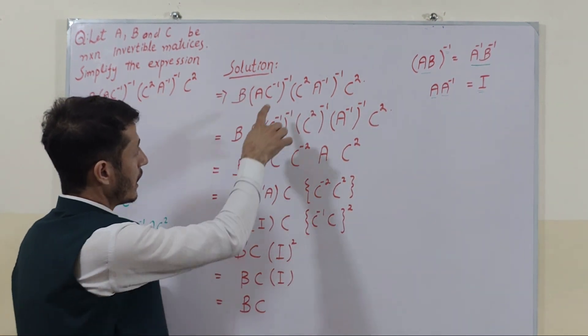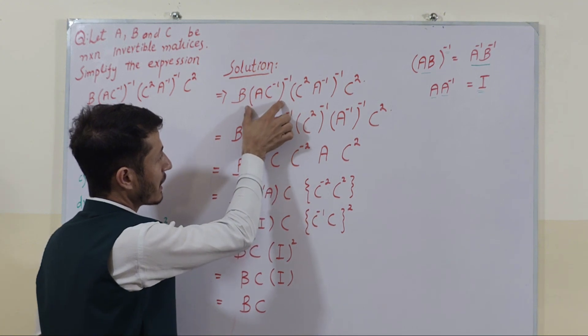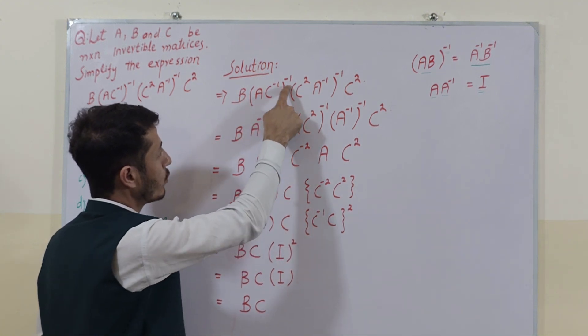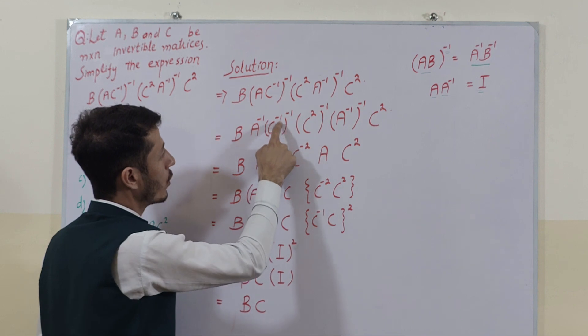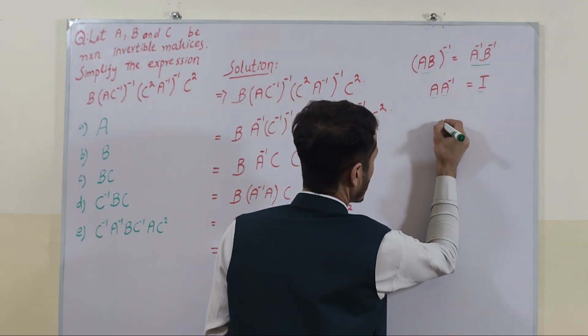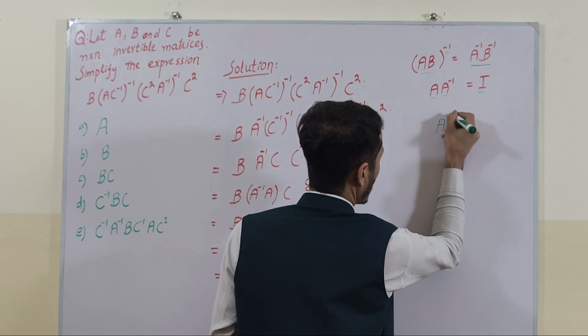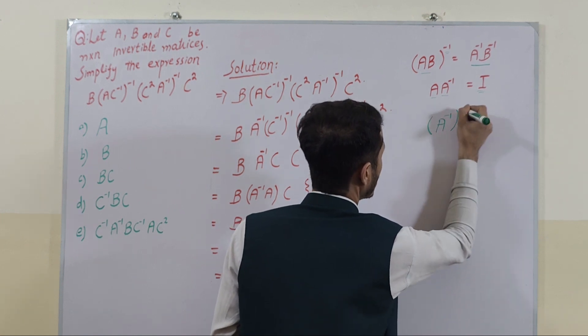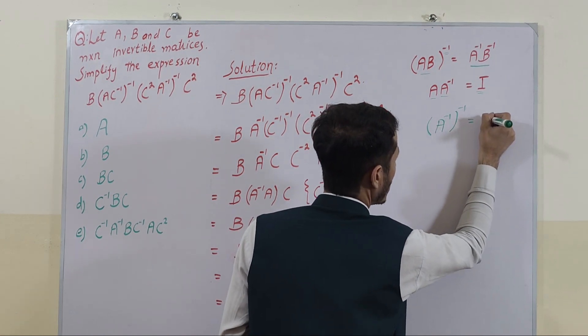So here if the inverse is applied across these parentheses, it becomes A inverse and C inverse whole inverse. And you know if A is a matrix of inverse and the whole inverse of A is equal to the matrix.